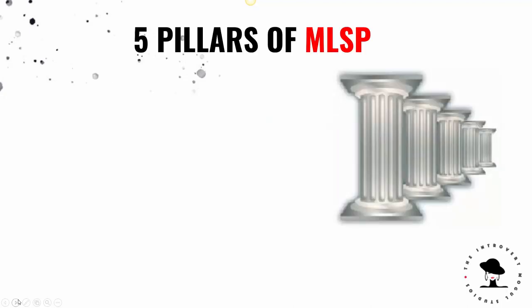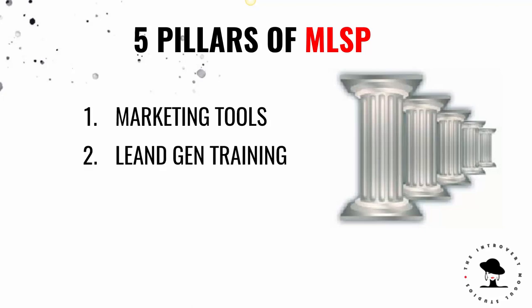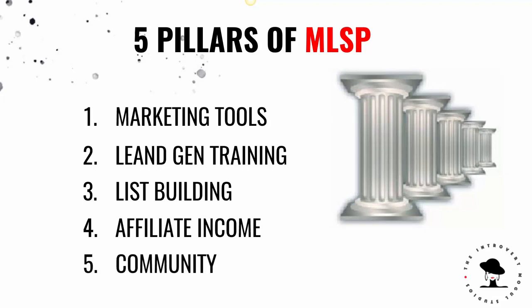So the five pillars of MLSP — this is basically how you break up how to use MLSP. Pillar number one is the marketing tools that they provide. Pillar number two is the lead generation training. Pillar number three is list building. Pillar number four is affiliate income. And pillar number five is the MLSP community.